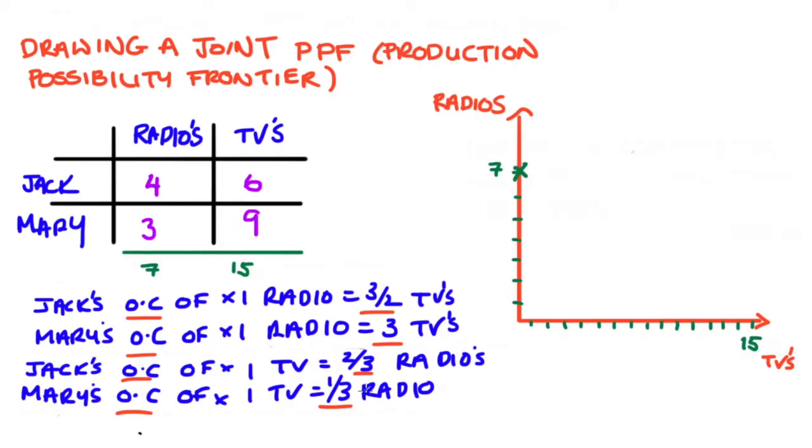Well, this is why it was important, I said before, to write down our opportunity costs. So you can see the opportunity costs of Jack and Mary for the production of TVs. And Jack, if he makes one TV, has to give up two thirds of a radio. Mary only has to give up one third of a radio. So Mary has the lower opportunity cost of making TVs. So the point is, if we're going from complete specialization in radios to just making one TV, we're definitely going to get Mary to do it because it's the case she has the lower opportunity cost.